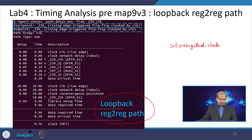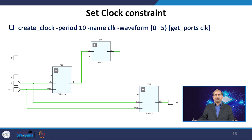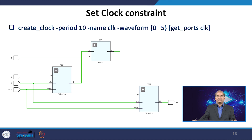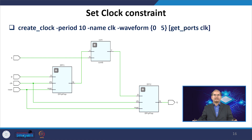The command set_propagated_clock is used to show the clock network delay in the timing calculation reports. We will now discuss some SDC constraints. SDC stands for Synopsys Design Constraint. These constraints are predominantly used in static timing analysis. Whenever you do any design, you give constraints to the design and those constraints are read by the tools to optimize your design.